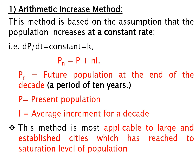For this we should know what the arithmetic increase method is. Basically, is mein yhe assumption karte hain ki jo bhi population increase ho raha hai per decade, it is constant — means dp/dt = k. And Pn, the future population at the end of n decades, is equal to P (present population) plus n into i, where n is number of decades and i is average increment per decade.